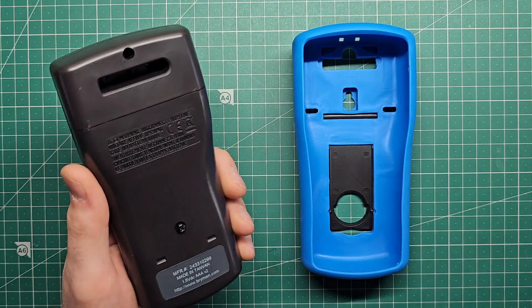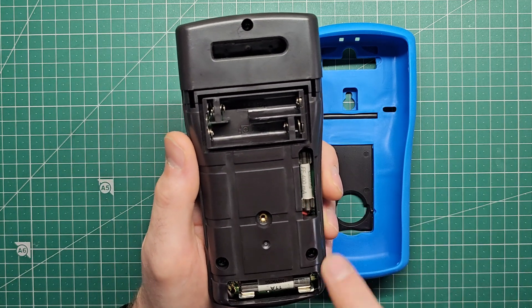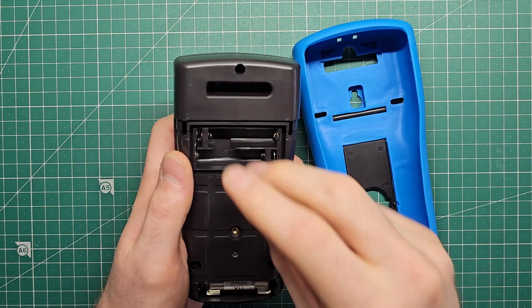And if we take off the back door we'll find the battery cradle and also two fuses here. These are for the current measurements and I'll explain that a bit later.